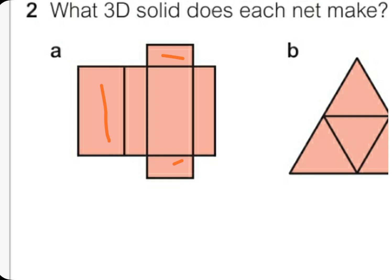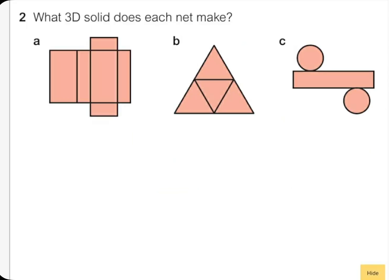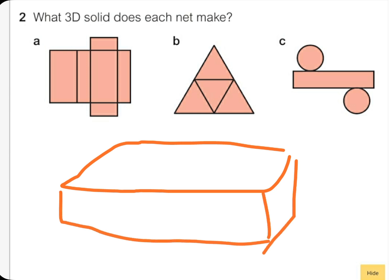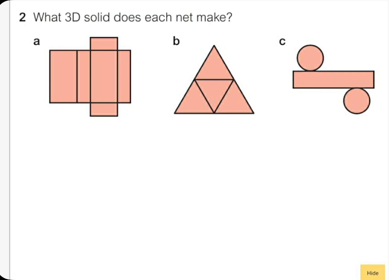So we have rectangles here, four of them, and then we have smaller rectangles here. So this shape will be what? It's going to be like this, let me show you. It's going to be a cuboid.